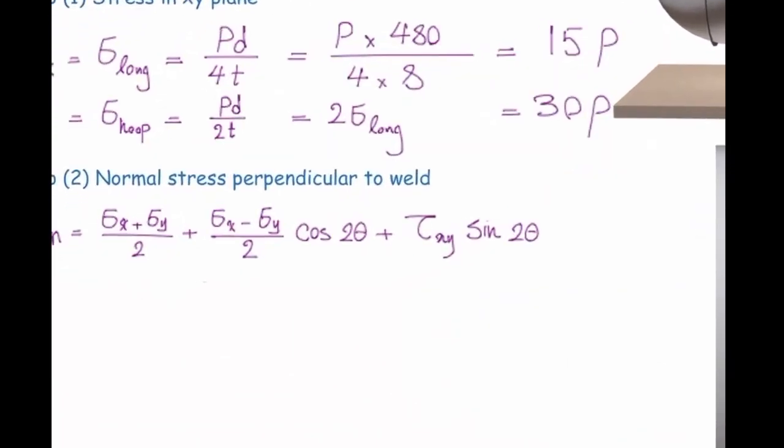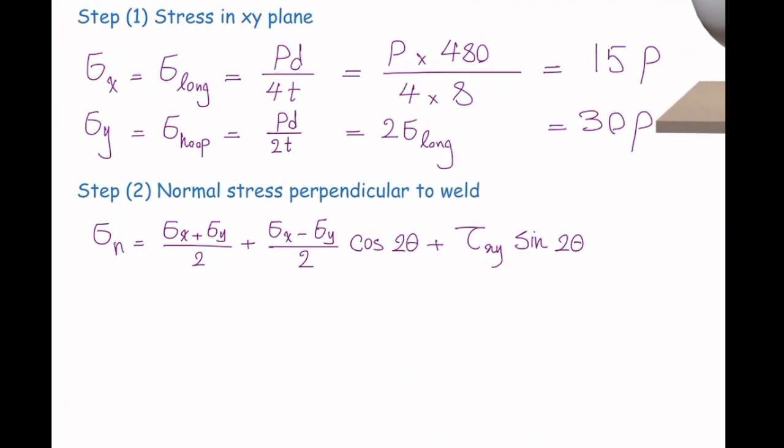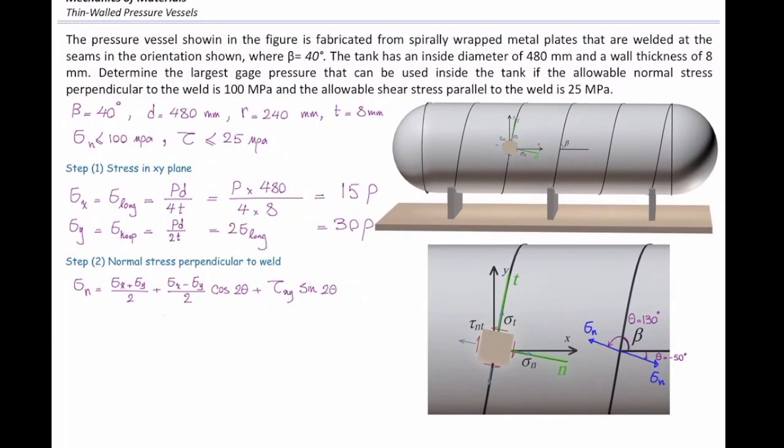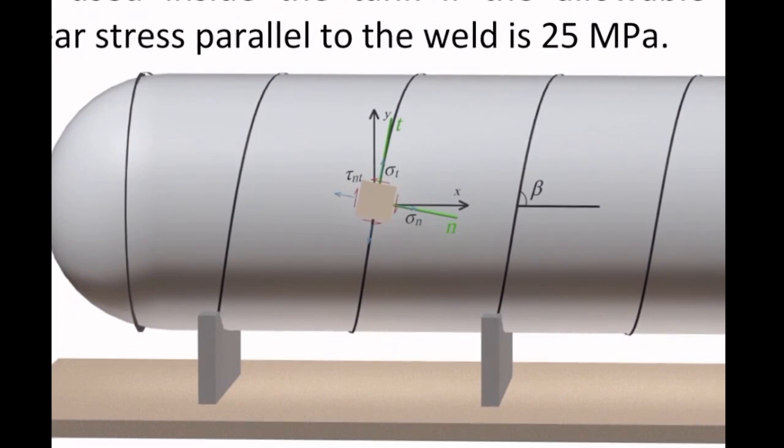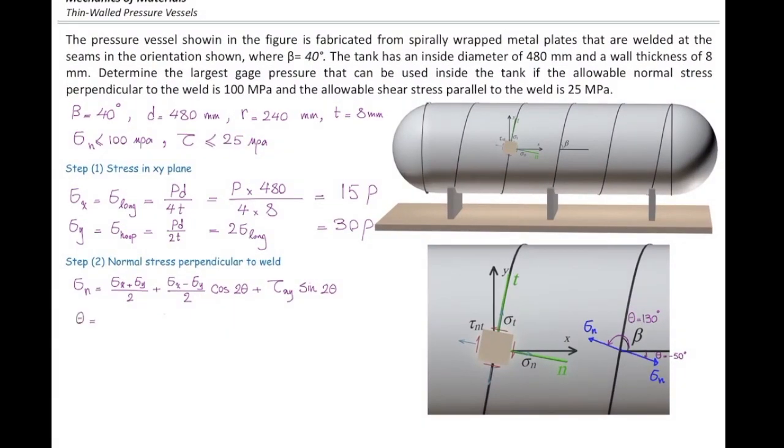Everything is determined by tau xy. What is that? I don't know how much is tau xy. I do know how much is tau xy, actually. And that is zero. Because there is not any shear stress on the surface of the pressure vessels, either spherical or cylindrical. So tau xy is zero. Now I'm going to plug the values.